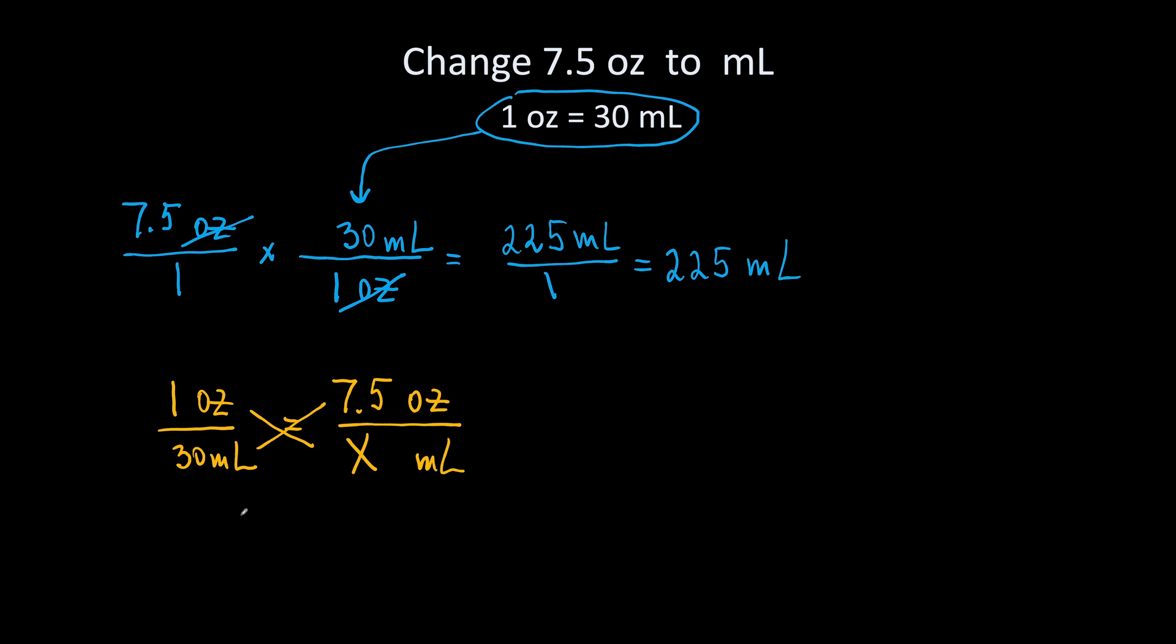1 times x, 1 times x is equal to 30 times 7.5. So 1 times x is x is equal to 30 times 7.5 is 225 milliliters.